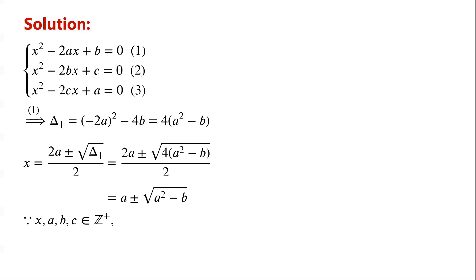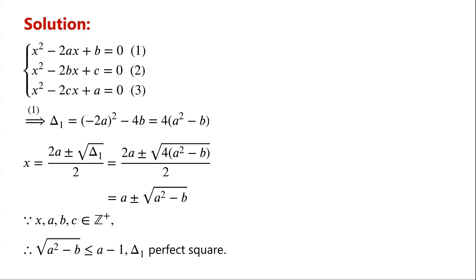Because x, a, b, and c are positive integers, the square root of a squared minus b must be less than a — that is, it must be less than or equal to a minus 1. And the discriminant Δ1 must be a perfect square.